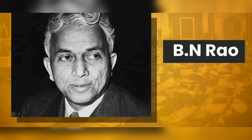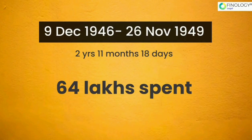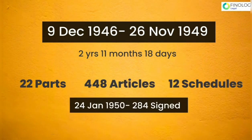The first meeting of the Constituent Assembly was on 9th December 1946. From the first meeting to the preparation of the final draft on 26th November 1949, approximately 64 lakh rupees were spent. 284 members of the Constituent Assembly signed the final draft of the Constitution of India.